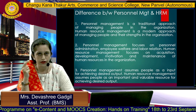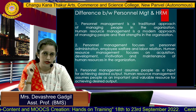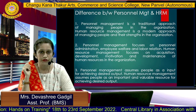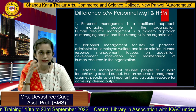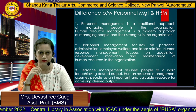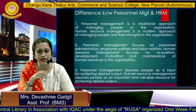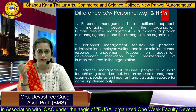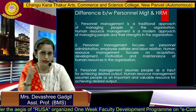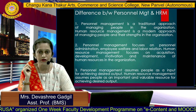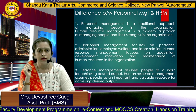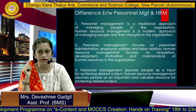Personal management and human resource management are two separate branches. Personal management is a traditional approach of managing people in the organization, whereas HRM is a modern approach. Personal management focuses on personal administration, employee welfare, and is more related to labor retention and maintaining labor. Whereas human resource management focuses on acquisition, development, motivation, and maintenance of human resources. Personal management moves towards maintaining blue-collar employees, whereas human resource management moves towards maintaining white-collar employees and has a wider scope.